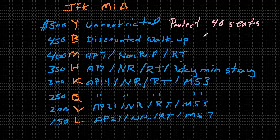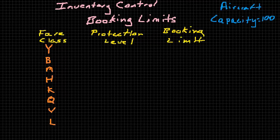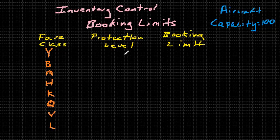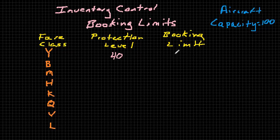And they use something called nesting to accomplish that. So let's take a look at an example — let's say we have an aircraft capacity of 100 seats, and the airline wants to protect 40 of those 100 for their Y-class customers, so for the highest fare. While they're setting aside 40 seats, they don't want to limit the number of seats that can be sold in that class to 40 — they actually want to allow up to the entire capacity of the aircraft to be sold at their highest fare. So the booking limit in this case for the highest fare would actually be 100.